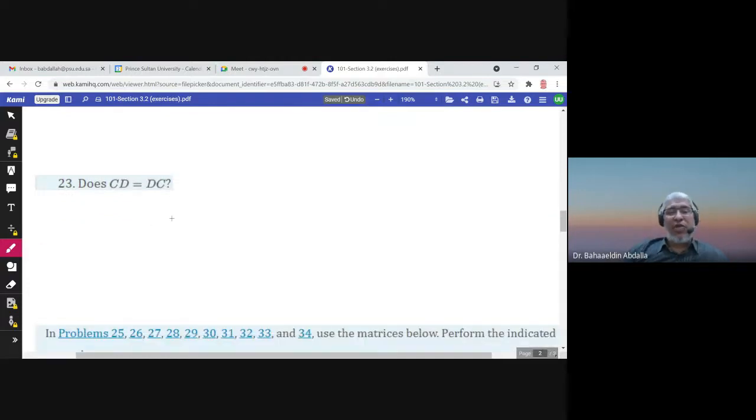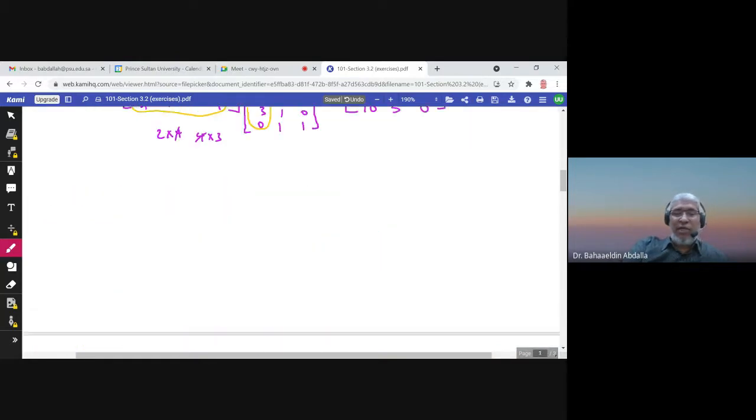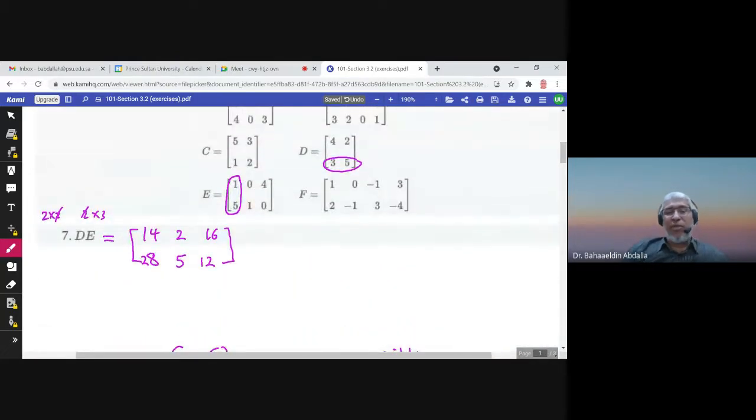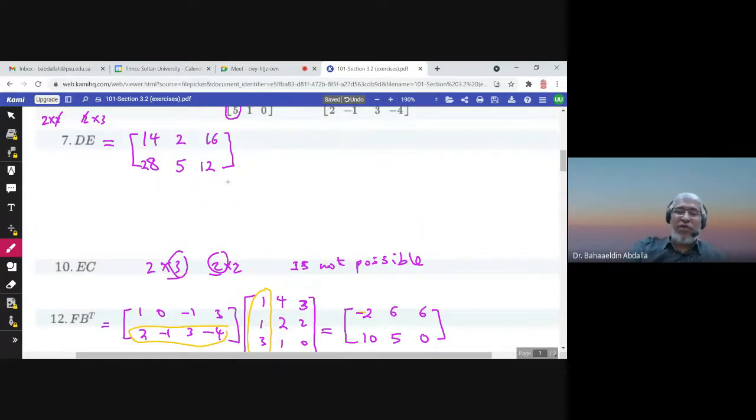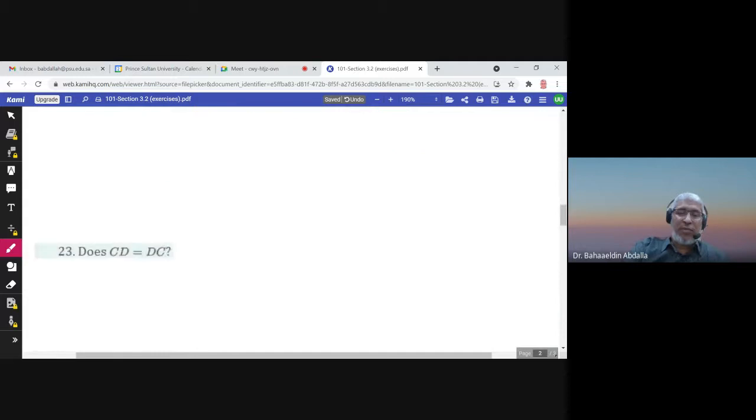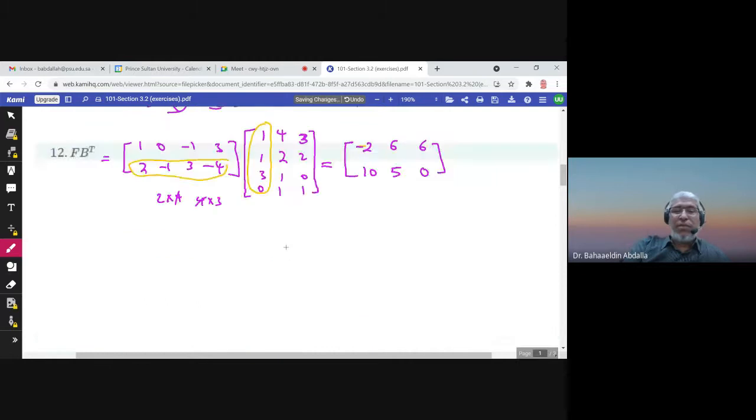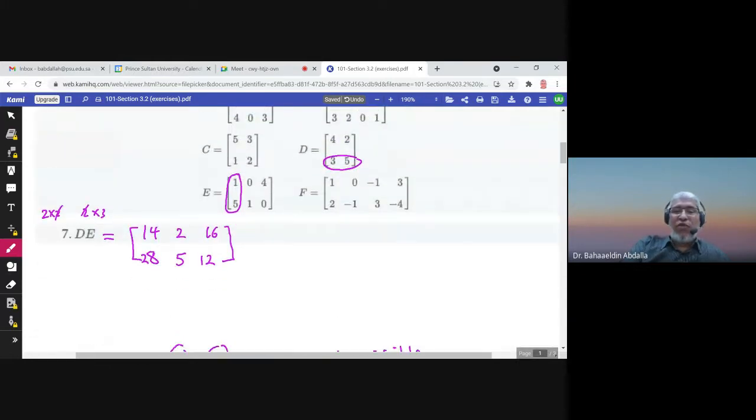Does CD equal DC? Well, in general, it's not correct. But let us try, make sure. 5, 3, 1, 2. This is C, and D is 4, 2, 3, 5.